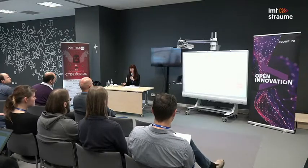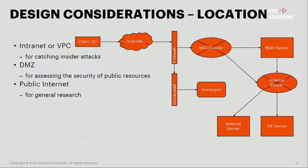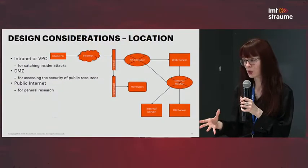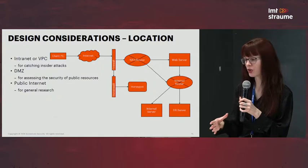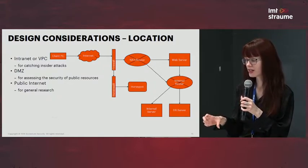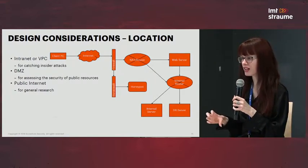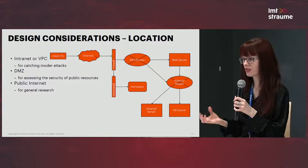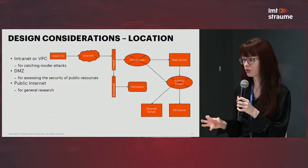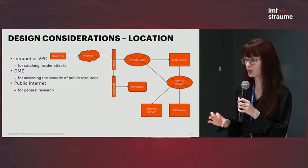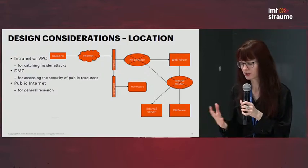An important thing to note is where you want to put your honeypot, and this depends largely on what you want to get out of it. If you put it on the public internet, you're looking at everything — all the attackers, what they typically do, including script kiddies, so you get a massive amount of data. If you're an organization, you will typically deploy a honeypot on your internal network to see insider threat, which is a really good thing because if someone's accessing that honeypot, then something's definitely off because no one's meant to even know that system is on there. So either you have an intruder who's been very skillful, or you have an insider who's up to no good.